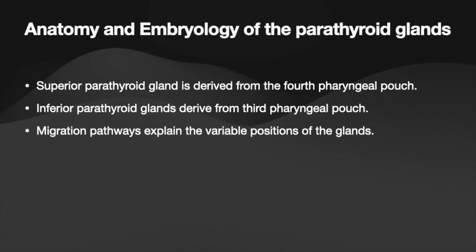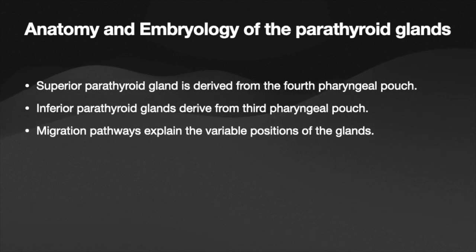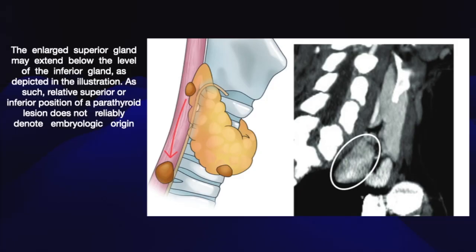The superior parathyroid glands are derived from the fourth pharyngeal pouch and the inferior parathyroid glands from the third pharyngeal pouch. The migration pathways explain the variable positions of the glands. Another phenomenon is called acquired ectopia — this means the relative superior or inferior position of a parathyroid gland does not denote its embryological origin. For example, an enlarged superior parathyroid gland can descend into the superior mediastinum, and this is called acquired ectopia.